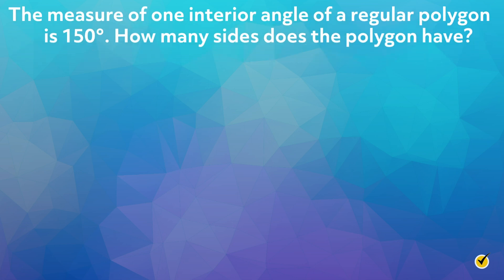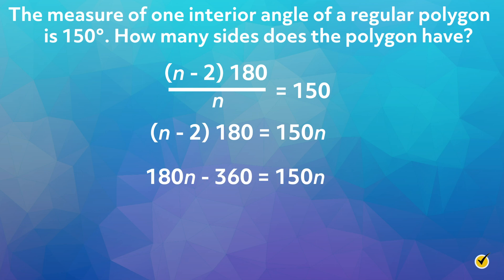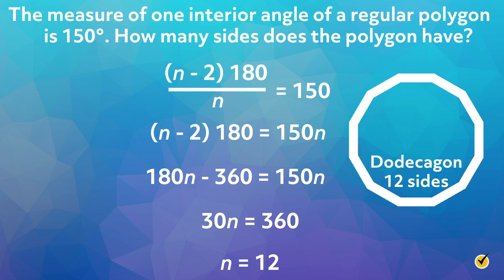The measure of one interior angle of a regular polygon is 150 degrees. How many sides does the polygon have? We substitute into the formula: n minus 2 times 180 over n equals 150. We eliminate the fraction by multiplying both sides by n to get n minus 2 times 180 equals 150n. Simplify using the distributive property: 180n minus 360 equals 150n. Combining like terms gives 30n equals 360. Then divide both sides by 30 to get n equals 12. Therefore, the regular polygon where one interior angle measures 150 degrees has 12 sides, which is called a dodecagon.